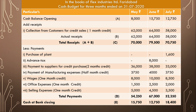Now we calculate total receipts and total payments to find the closing cash balance. Opening cash balance for May is 8,000. Adding actual receipts of 62,000 gives total receipts of 70,000. Total payments come to 54,250. Deducting payments from total receipts gives a closing cash balance for May of 15,750.